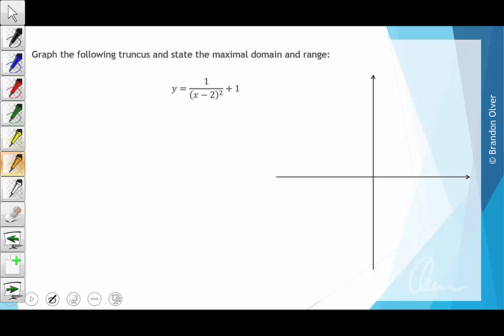Because it's already in the form, we can already state the transformations that have occurred to this graph. The first transformation is that it's been translated two units in the positive x direction. That's because if we have a look at the denominator, we've got x minus 2 all squared. So we take the zero of that bracket, we get x is equal to positive 2, which is going to be the equation of the vertical asymptote.